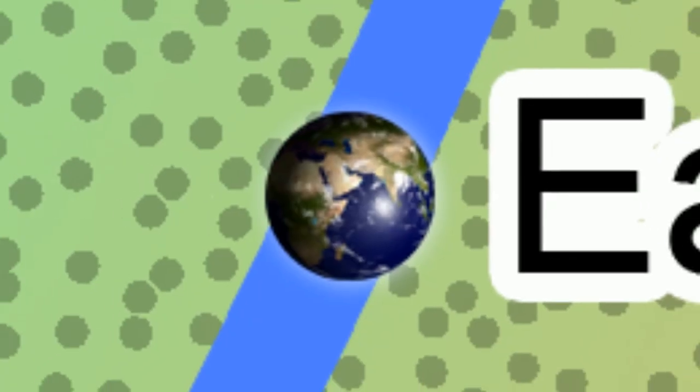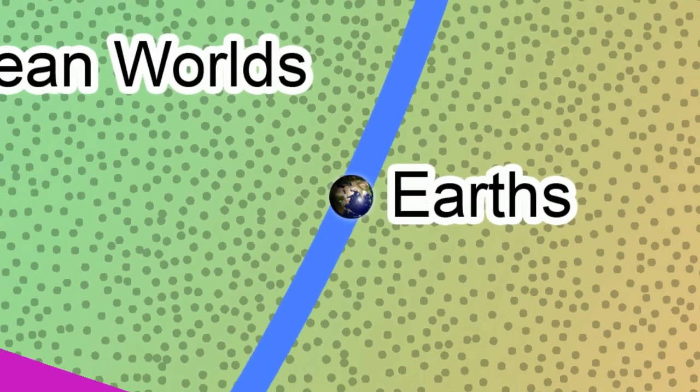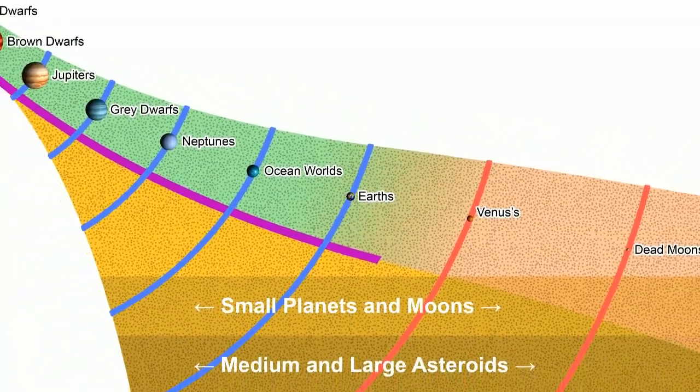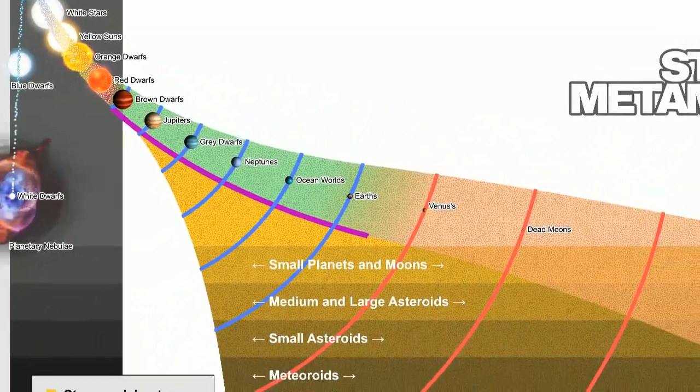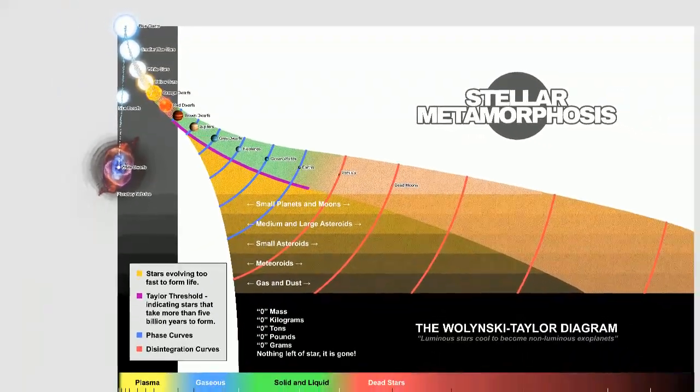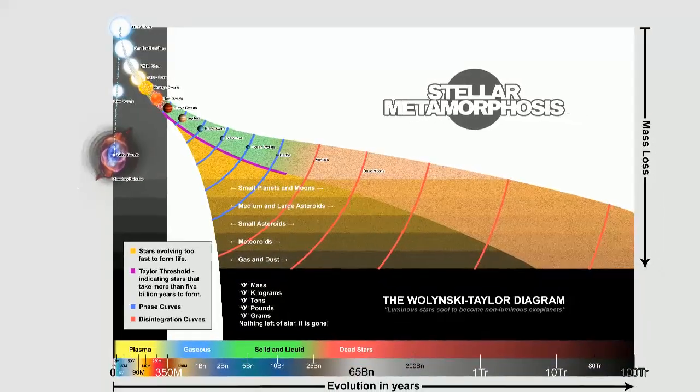Earth was shaped by the same processes in operation today. Charles Lyell and James Hutton were correct. It is ancient almost beyond measure. But why? This video should serve as an explanation to that why.